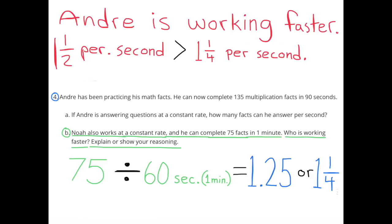75 facts divided by 60 seconds equals 1 and 25 hundredths or 1 and 1 fourth second. It takes Noah 1 and 1 fourth second to answer one fact. Andre is actually faster because he's answering 1 and a half per second and Noah is only answering 1 and a quarter per second.